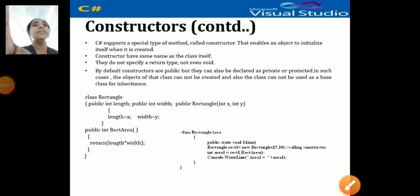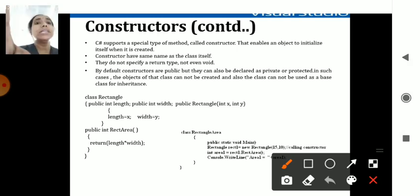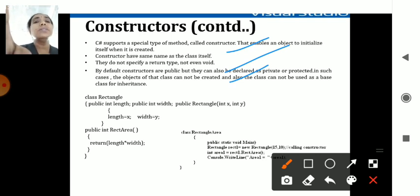Today we will be discussing constructors. Constructors are methods which can be either a default constructor or a parameterized constructor. The constructor name must be the same as the class name, it does not have any return type. Default constructors are called without any values — the value part is left blank, that is a default constructor.